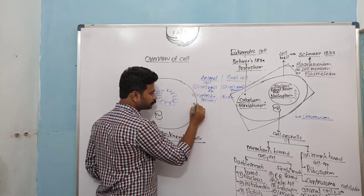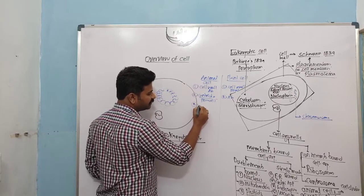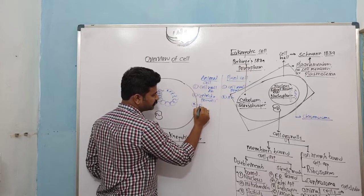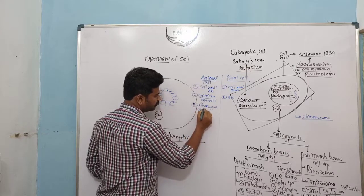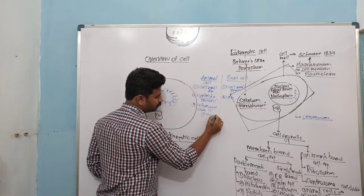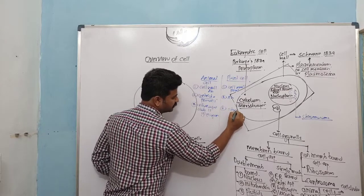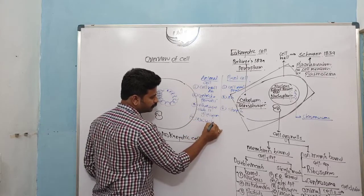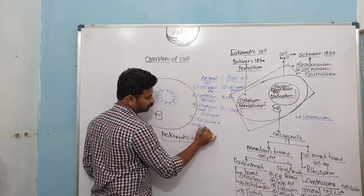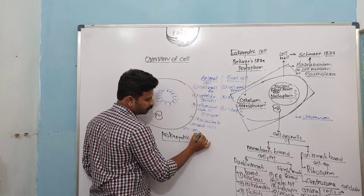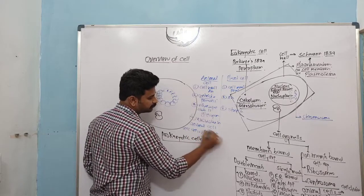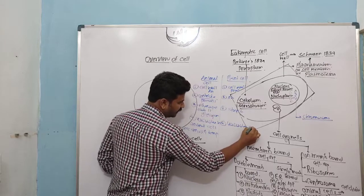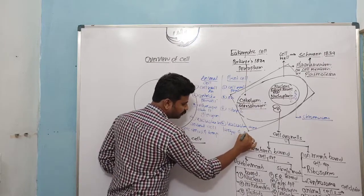Difference number three — in animal cells the storage substance is glycogen, while in plant cells the storage substance is starch. Difference number four — vacuoles in animal cells are small and temporary, while in plant cells vacuoles are large and permanent.